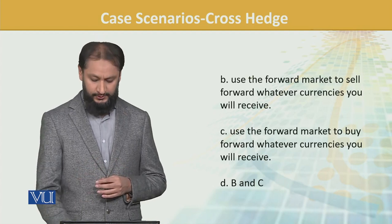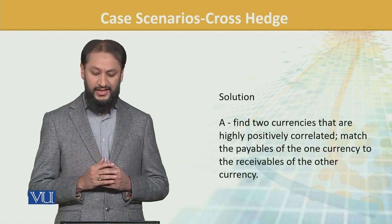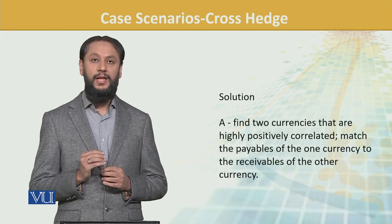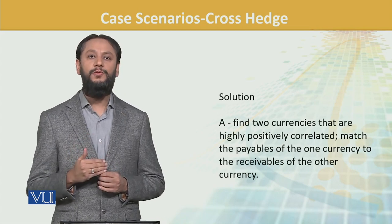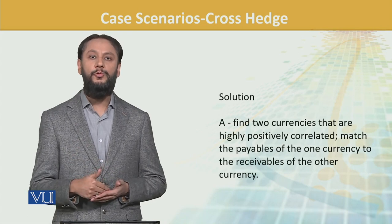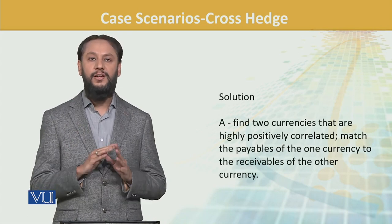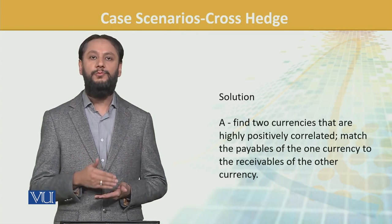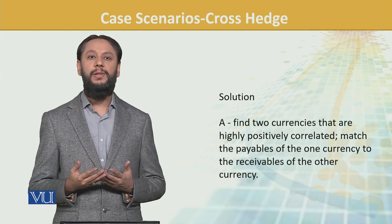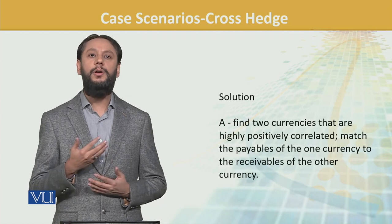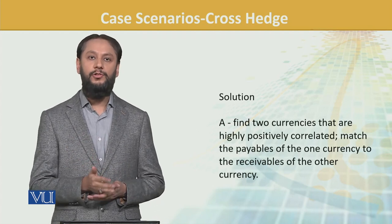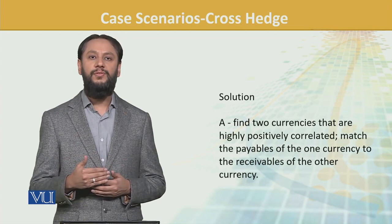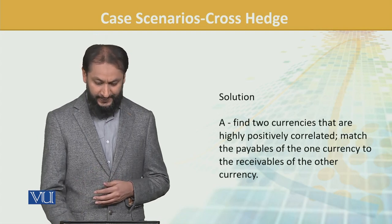The right answer is Option A — find two currencies that are highly positively correlated and match the payables of one currency to receivables of the other. Options B and C were direct hedges — they hedge in the same currency itself. When you hedge in the same currency, that is not a cross hedge; that is a true hedge. The cross hedge situation arises when that option is not available — for example, if your exposure is in Japanese yen but no yen contract is available, then you go to dollars and take a position in dollars to safeguard the yen exposure.